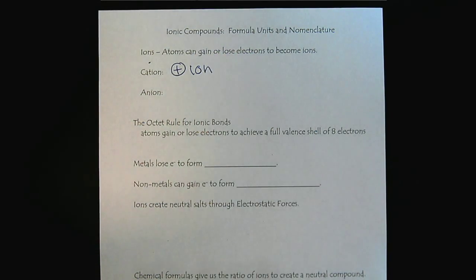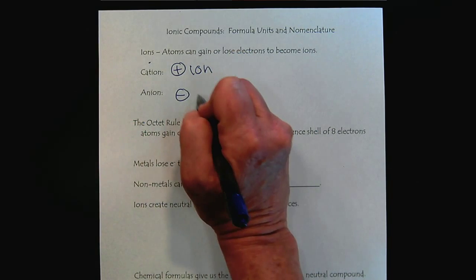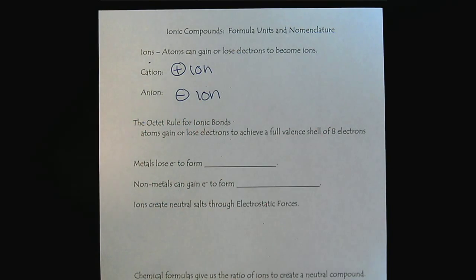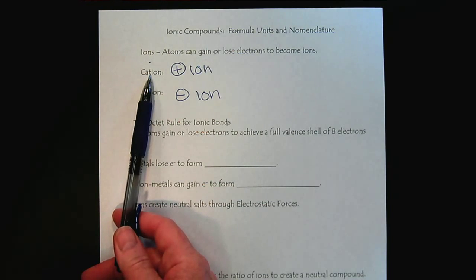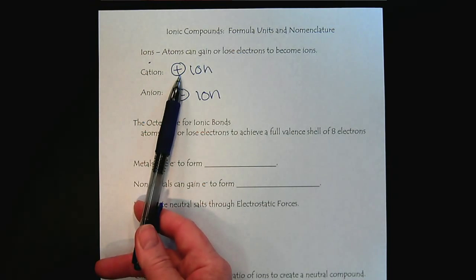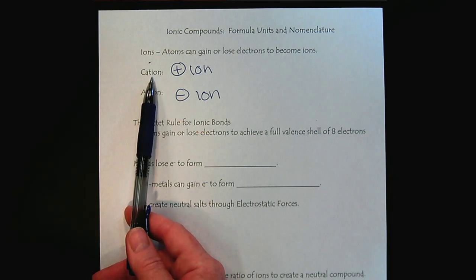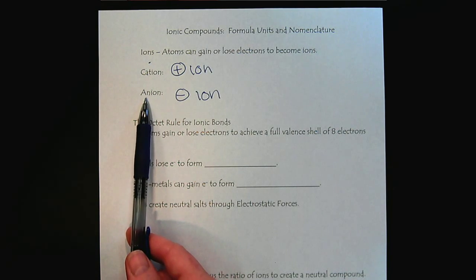And then anions, of course, are negative ions. So if you're having trouble keeping these straight, remember that the T in cations resembles the plus sign. So that reminds us that cations are positive. And then anions with that N there are negative.